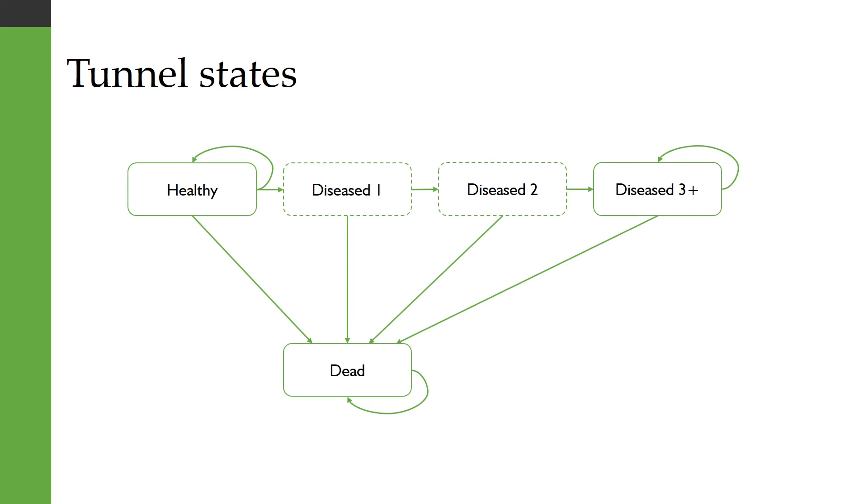And then your final box, final state which does have a loop back to itself is people who have had the disease for over a certain length of time. Now in each one of these tunnel states it's still possible to transition to dead but if you don't transition to dead then you have to move on to the next one of the tunnel states.